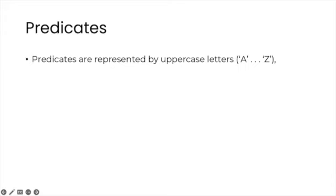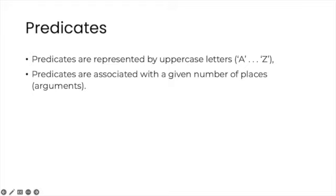Predicates are represented by uppercase letters from A to Z, and they are also associated with a given number of places, which are also called arguments, confusingly enough, has nothing to do with the way in which we use the word to designate sequences of premises and conclusions. The predicate ISTALL has only one place, reserved for the object or person that is said to be tall. So we say that ISTALL is a one place or monadic predicate.